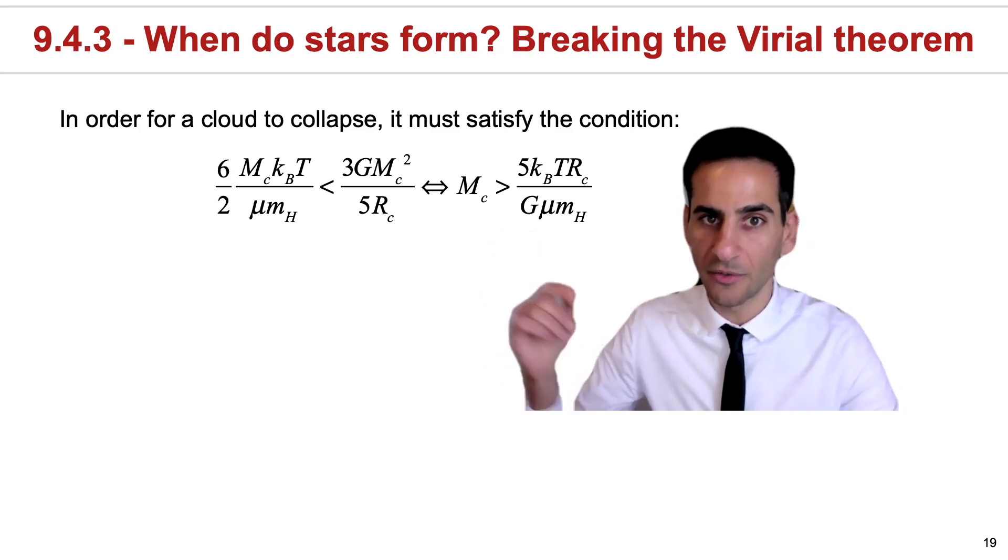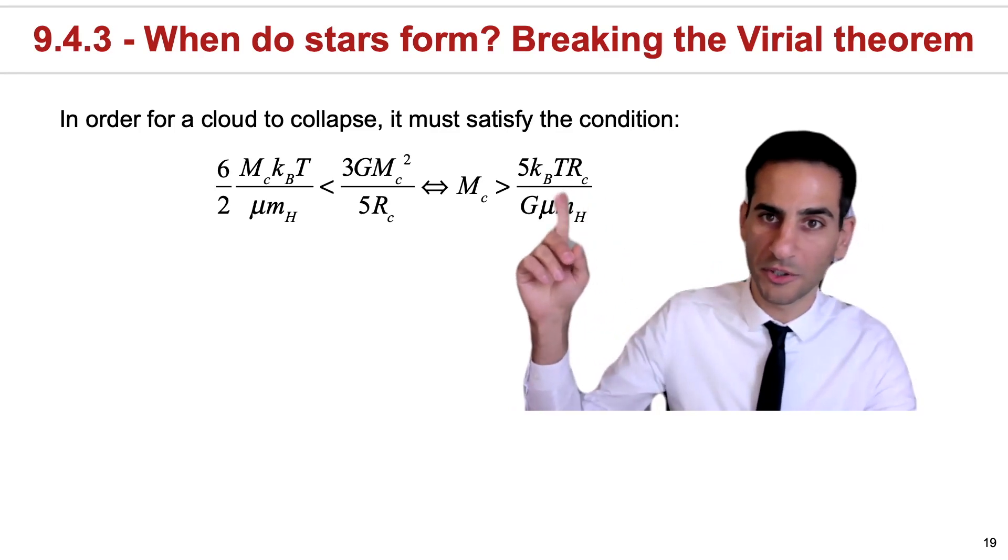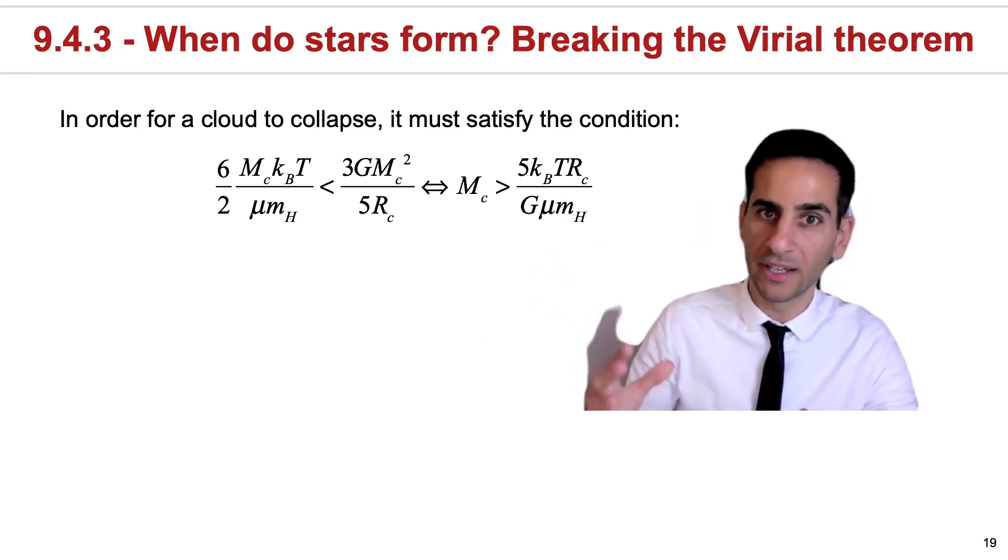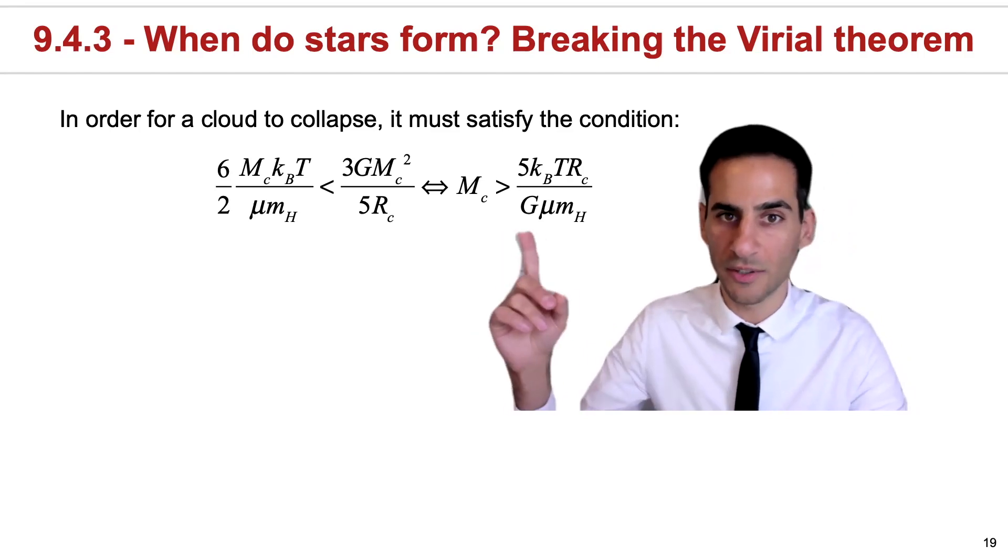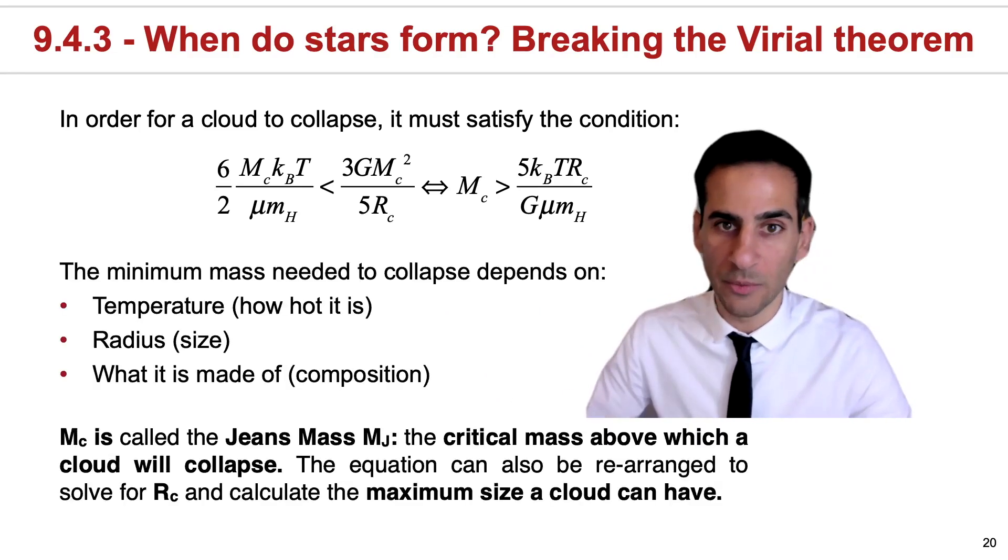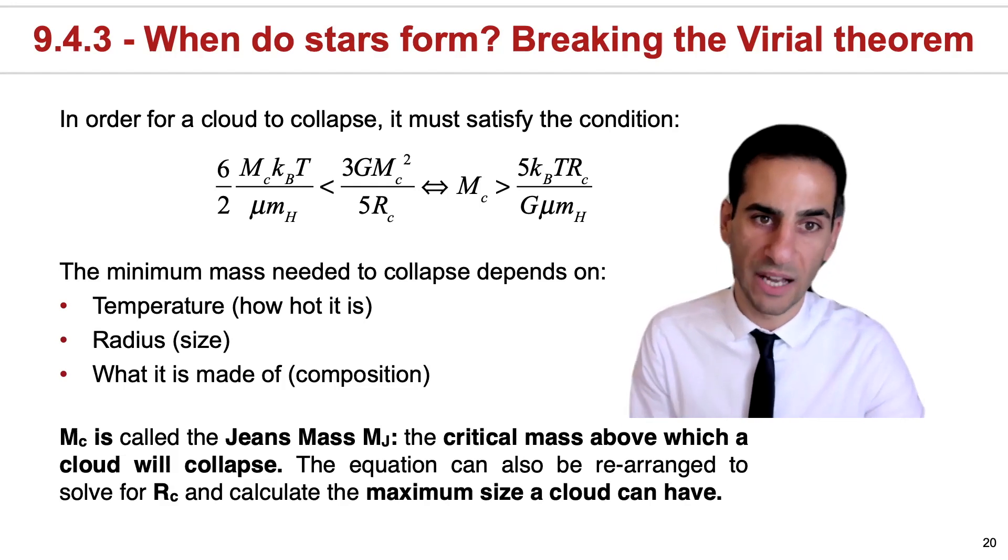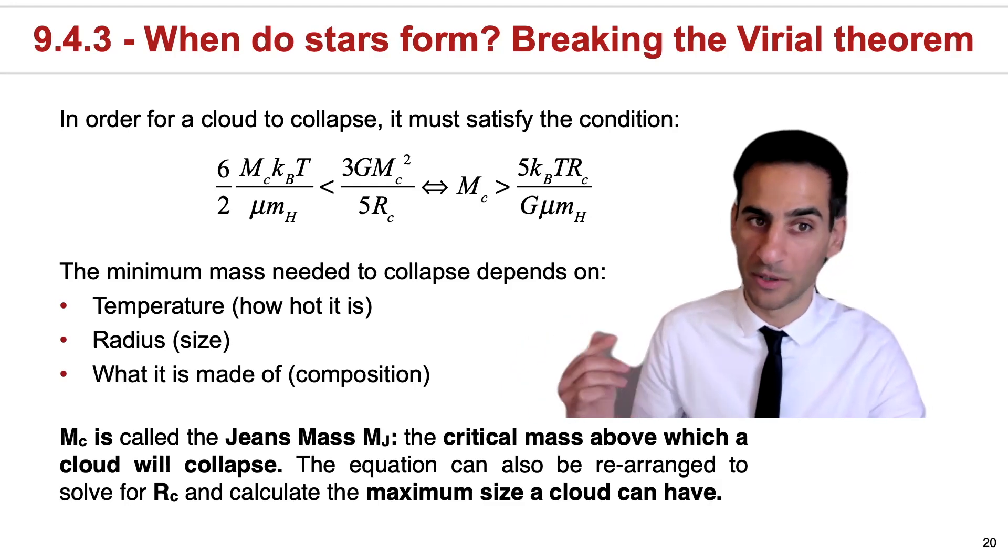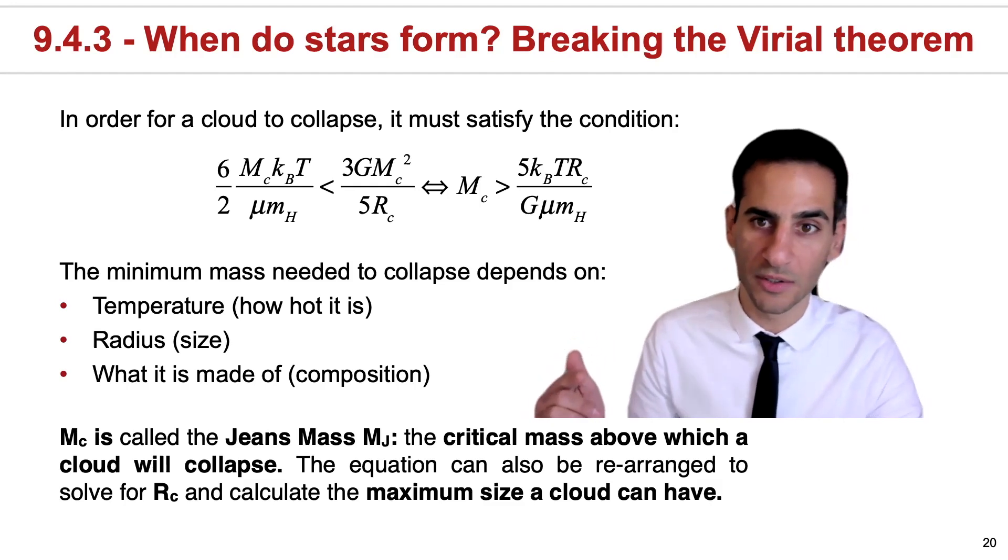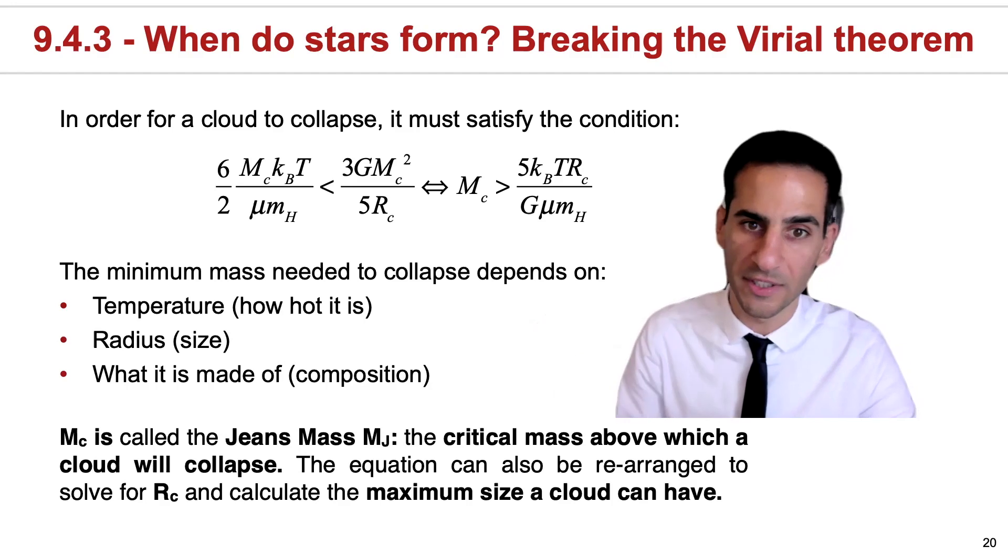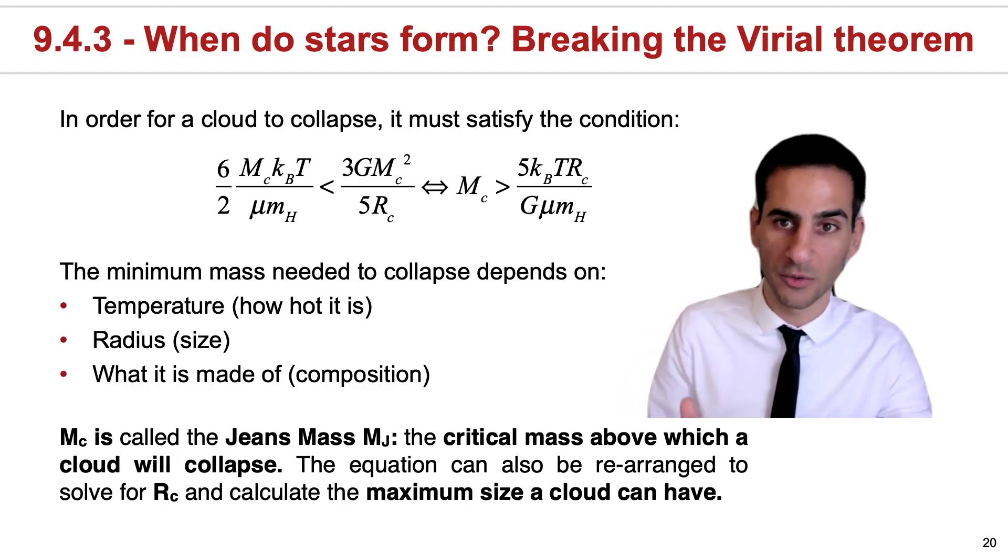Therefore, the minimum mass you need for the cloud to collapse will depend on the temperature. Therefore, the higher the temperature, the more massive the cloud will have to be. It will depend on the radius of the cloud. If the cloud is very big, again, the mass will need to be higher, and it will also depend on what the cloud is made of. So depending on whether it's just made of hydrogen versus heavier elements, then the total mass will actually have to be different for the cloud to collapse. So ultimately, what this is teaching us is that the minimum mass for a cloud to collapse depends on the temperature, depends on how hot it is. Therefore, clouds which are colder can collapse even if they're not very massive. It depends on the radius and also on the composition. When the mass of the cloud equals this exactly, we call it the Jeans mass, and the reason for it is because this is the critical mass above which a cloud will definitely collapse.